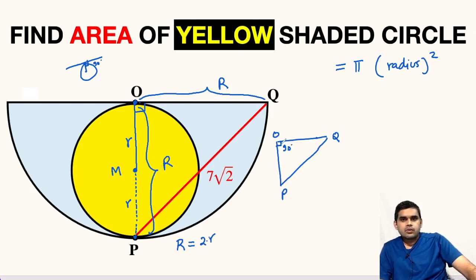This is a right angle triangle OPQ where OP will be capital R, OQ will be capital R, and PQ is given as 7 root 2.